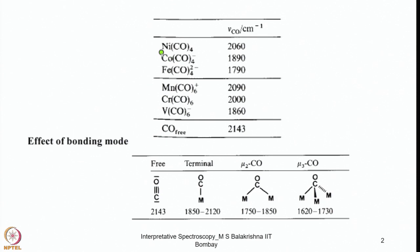Nickel tetracarbonyl shows around 2060 cm⁻¹, whereas cobalt tetracarbonyl anion Co(CO)₄⁻ — when it is dimeric it is neutral because it is a 17-electron species, and with Co(CO)₄⁻ it is an 18-electron species. Here the stretching frequency drops considerably to 1890 cm⁻¹ because of excess negative charge on cobalt.